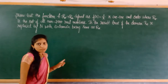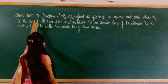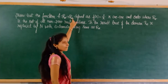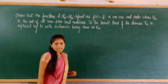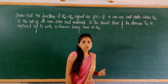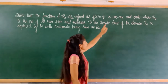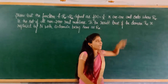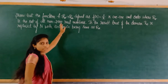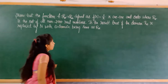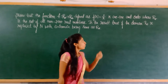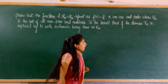The next problem is: show that the function f from R* to R*, defined as f(x) = 1/x, is one-to-one and onto. We have to show that f from R* to R* defined as f(x) = 1/x is both one-to-one and onto.